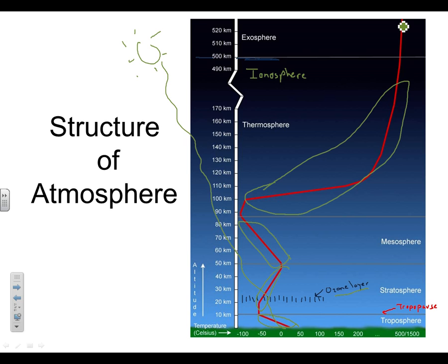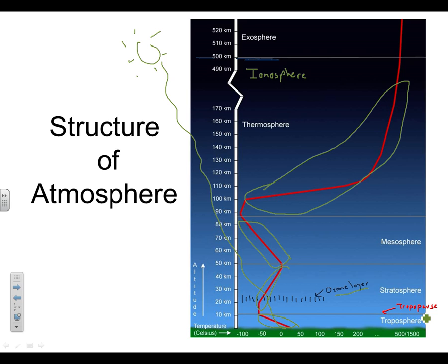Now go to your green note sheet. The troposphere is the lowest layer; almost all the weather is in the troposphere; 75% of all the atmosphere's gases are in this tiny layer; and temperature decreases with altitude. The tropopause is the boundary between the troposphere and stratosphere. Its significance is that it's usually the top of the weather, and the jet streams happen here — basically really strong rivers of wind.